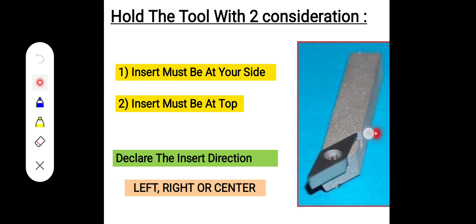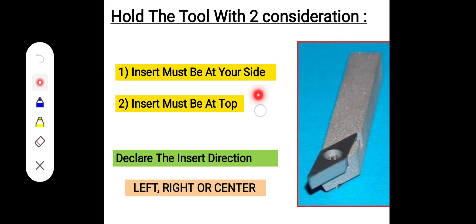Here we have one example where we hold the tool and rest it on the table. The first consideration is that the insert must be at your side — insert is definitely at our side, so first tick. The second consideration is that the insert must be at the top — insert is already at the top. Both two considerations are correctly satisfied.